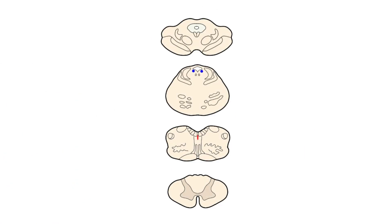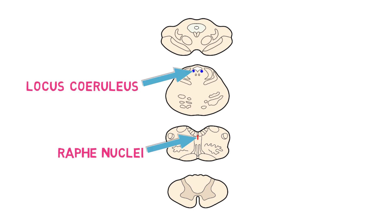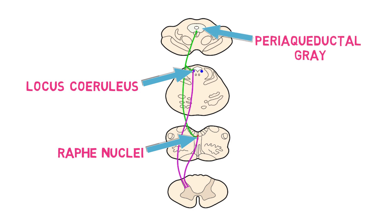Scientists are still working to fully understand natural pain modulation, but studies have found that descending pathways to the spinal cord arise from several brain stem areas, such as the raphe nuclei and locus coeruleus. Neurons that extend from the periaqueductal gray make excitatory connections with neurons in these and other regions, and those neurons travel down to the dorsal horn of the spinal cord, where they form inhibitory connections with neurons that transmit pain information.